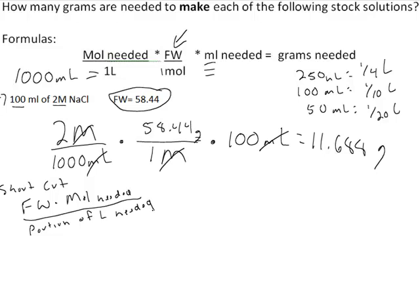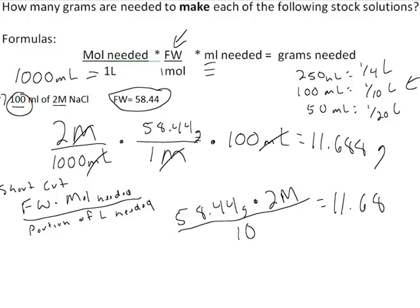If we're doing a shortcut for this calculation, we would take 58.44 grams times our moles needed, and in this case we need our 2 moles, divided by the portion of the liter needed. Since we need 100 milliliters, that gives us 1 tenth. So divide that by 10, and that will still give you 11.688 grams. And it gives you the same answer, even though it's a bit of a shortcut.